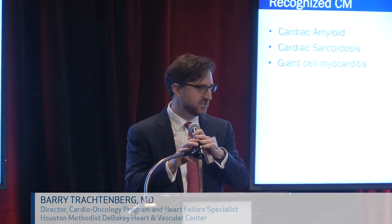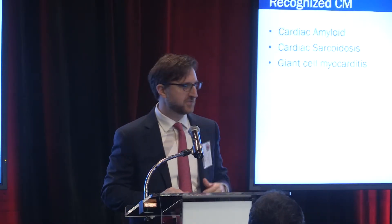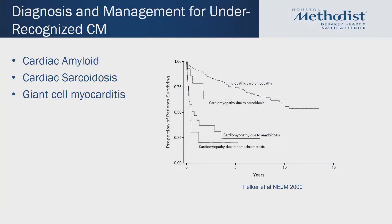This is a talk on interesting cardiomyopathies — the cardiomyopathies I find interesting. Some of the under-recognized cardiomyopathies — looking at the infiltrative cardiomyopathies — their prognosis compared to idiopathic dilated cardiomyopathy is much, much worse. I want to focus on three: cardiac amyloidosis, cardiac sarcoidosis, and giant cell myocarditis, to give you exposure to these three areas in about 14 minutes.